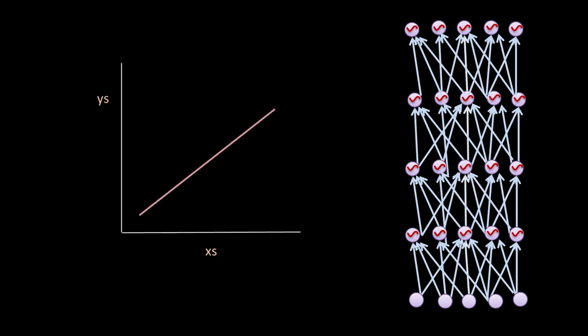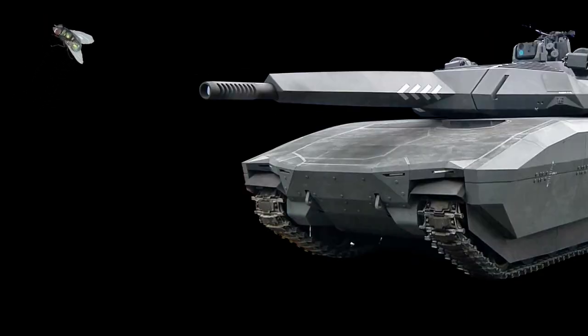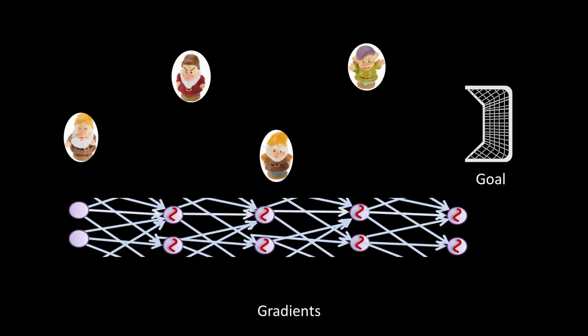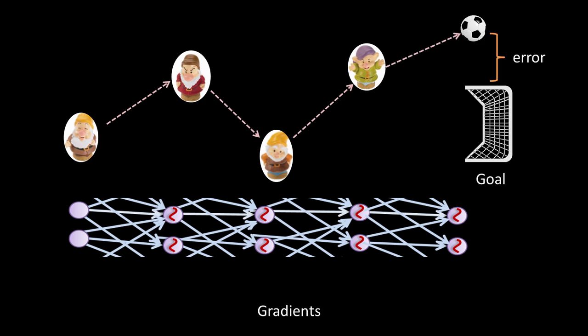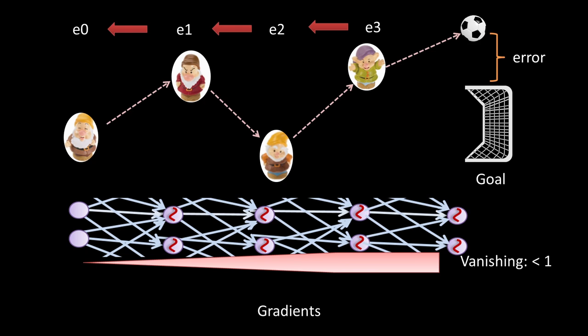First, trying to solve simple linear problems using multi-layer neural networks is like trying to kill a fly with a tank — it may do the job but it's very messy and inefficient. Second, backpropagation is not bulletproof, especially for deep networks. Imagine several people collaborating to score a goal but making errors — you need to blame the errors on each player correctly, starting from the last back to the first. Two problems may occur: you blame too much error on the early players and by the time you reach the first layer you have nothing to blame — this is called the vanishing gradient problem.